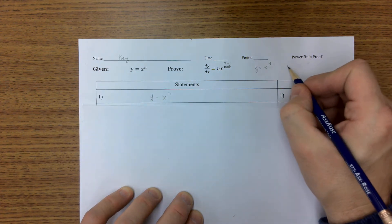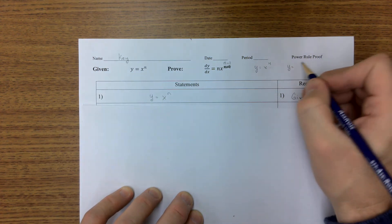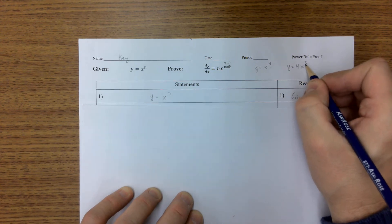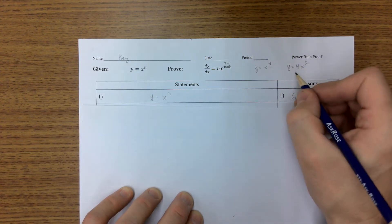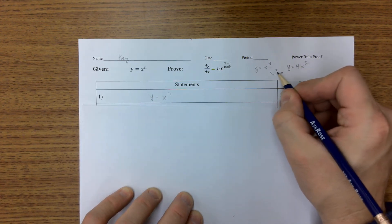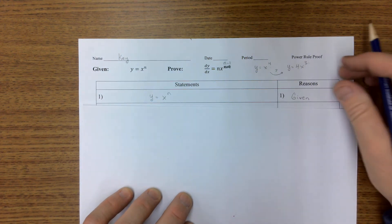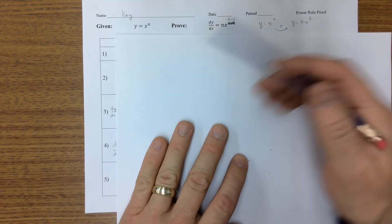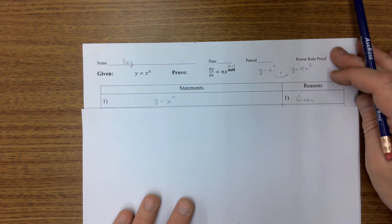...we should know by now that the derivative is simply 4x to the third, but we want to prove why is that okay to do, why does that happen. All right, it's a five step proof. I'm going to go through the steps right here and they're already written out.